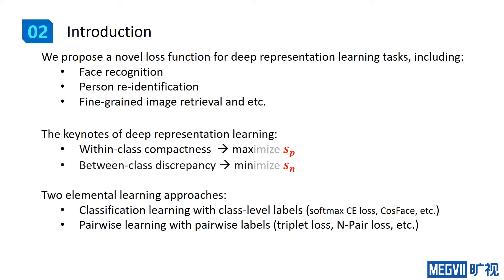The keynotes of such a deep representation learning task are within-class compactness and between-class discrepancy. In other words, we want to maximize the within-class similarity s_p and to minimize the between-class similarity s_n.